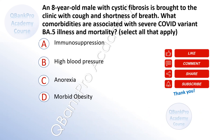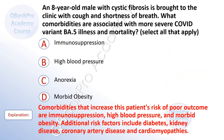An eight-year-old male with cystic fibrosis is brought to the clinic with cough and shortness of breath. What comorbidities are associated with severe COVID variant BA5 illness and mortality? Select all that apply. A. Immunosuppression. B. High blood pressure. C. Anorexia. D. Morbid obesity. The correct answers are A, immunosuppression; B, high blood pressure; and D, morbid obesity. Additional risk factors include diabetes, kidney disease, coronary artery disease, and cardiomyopathies.